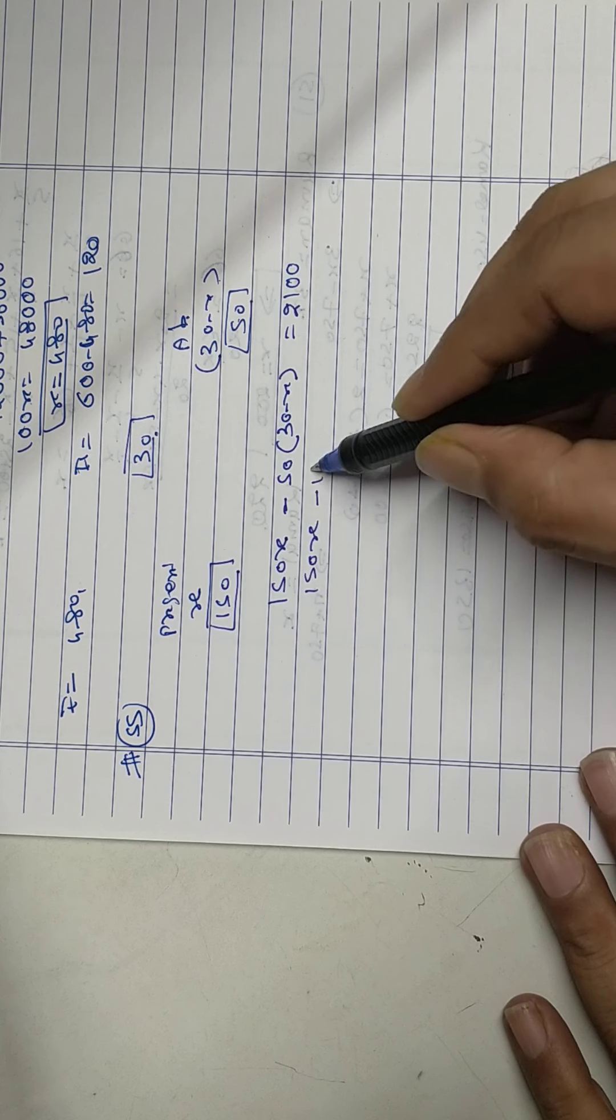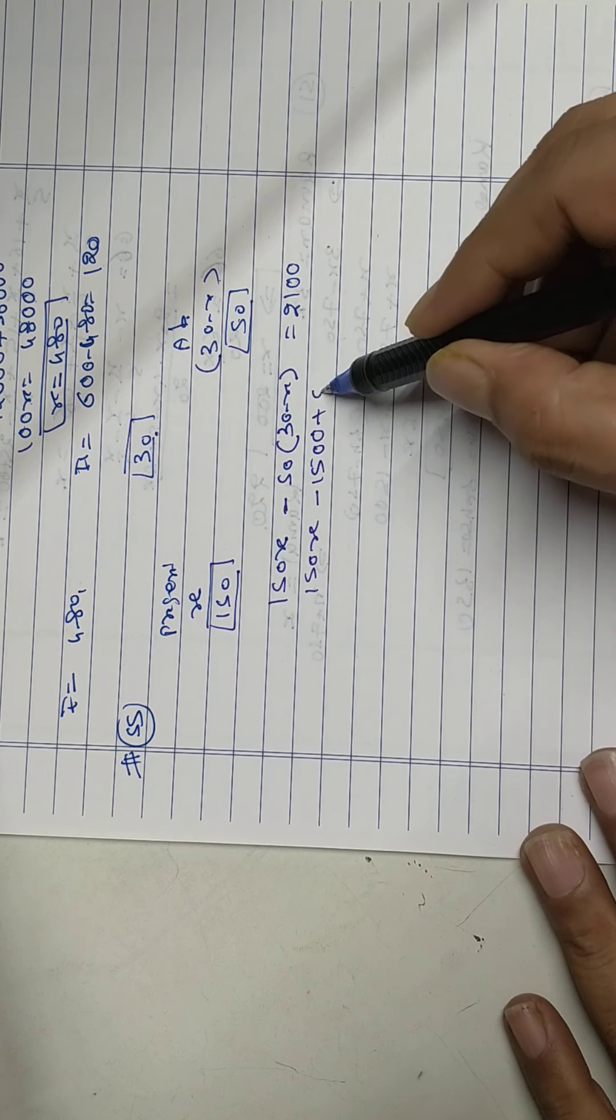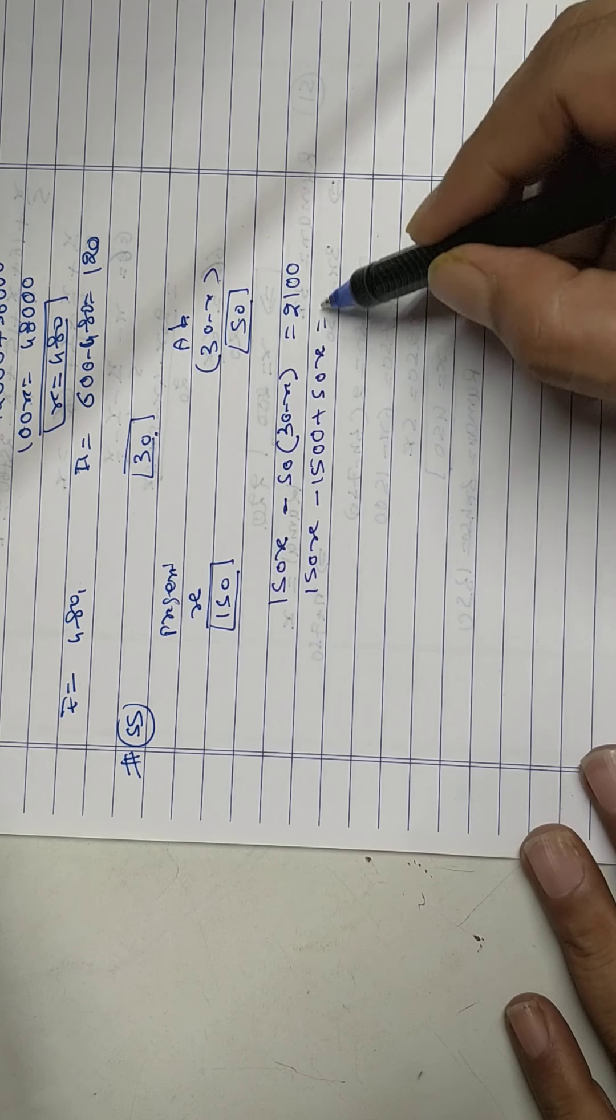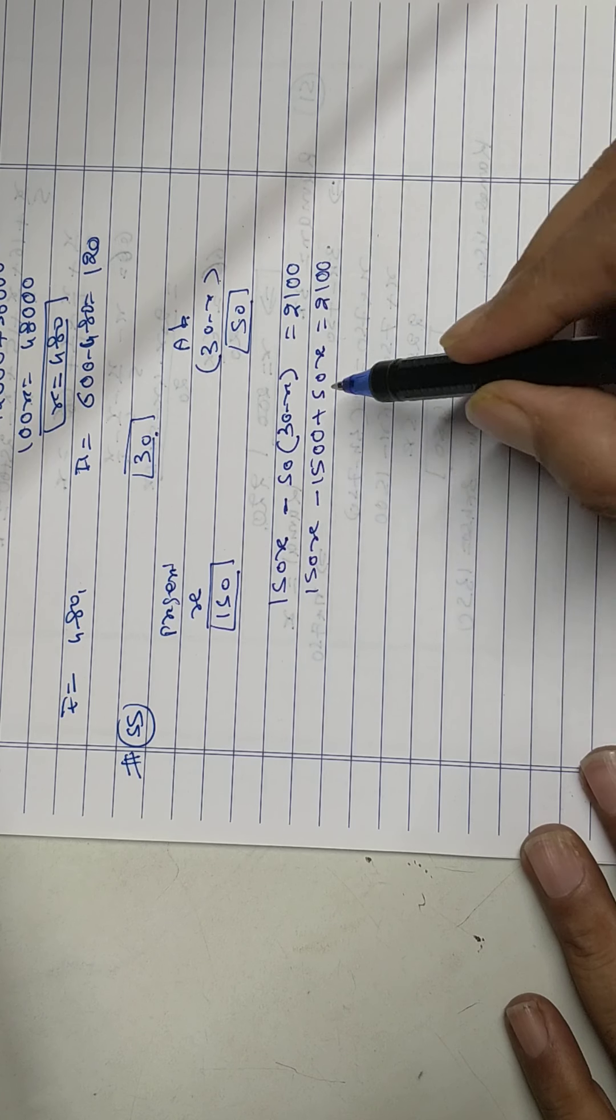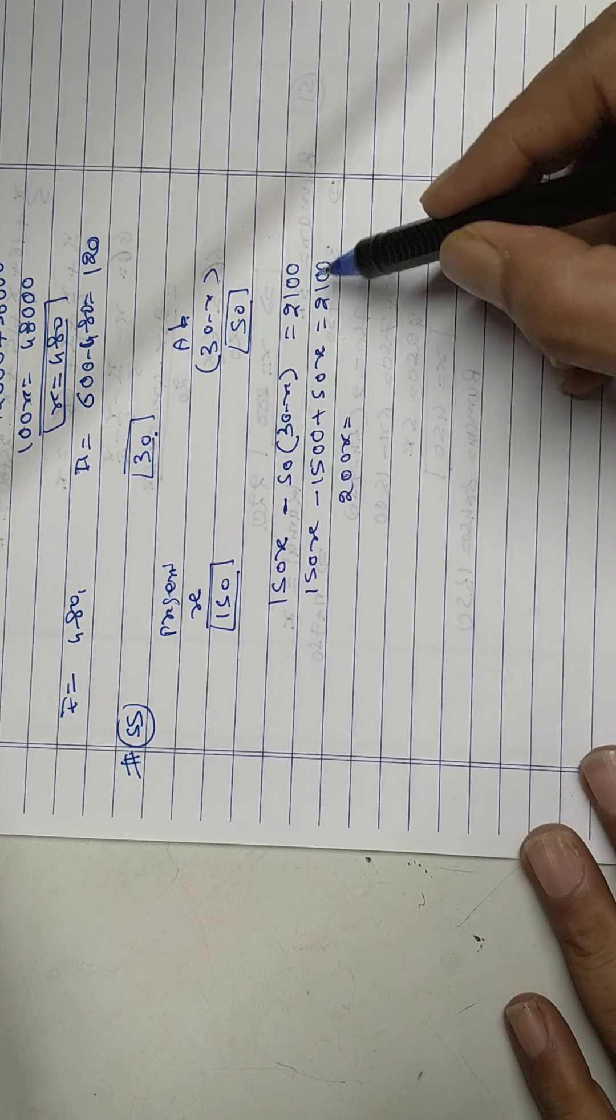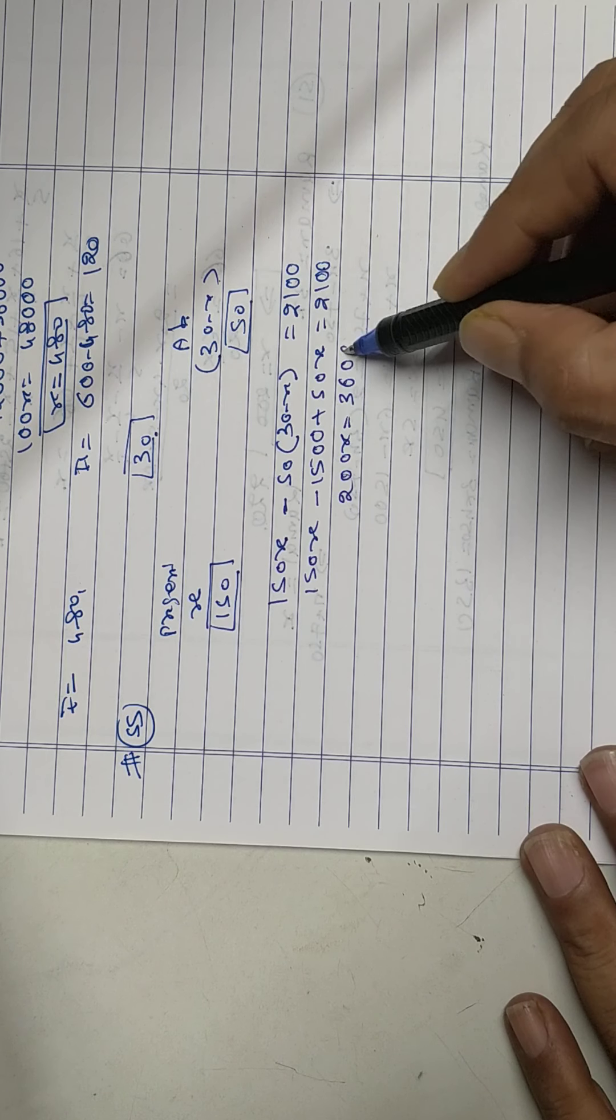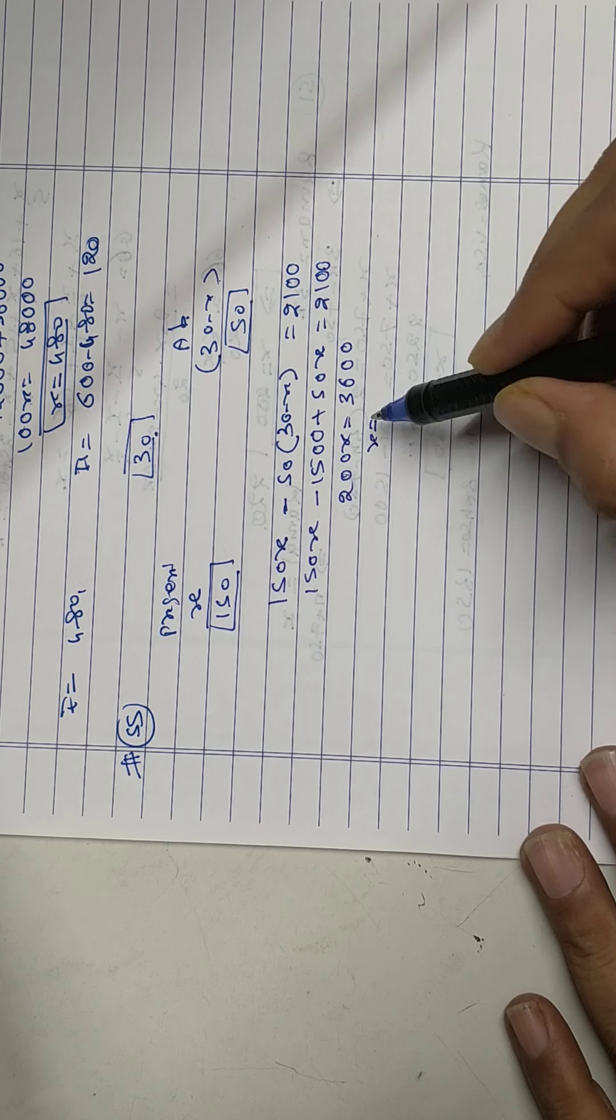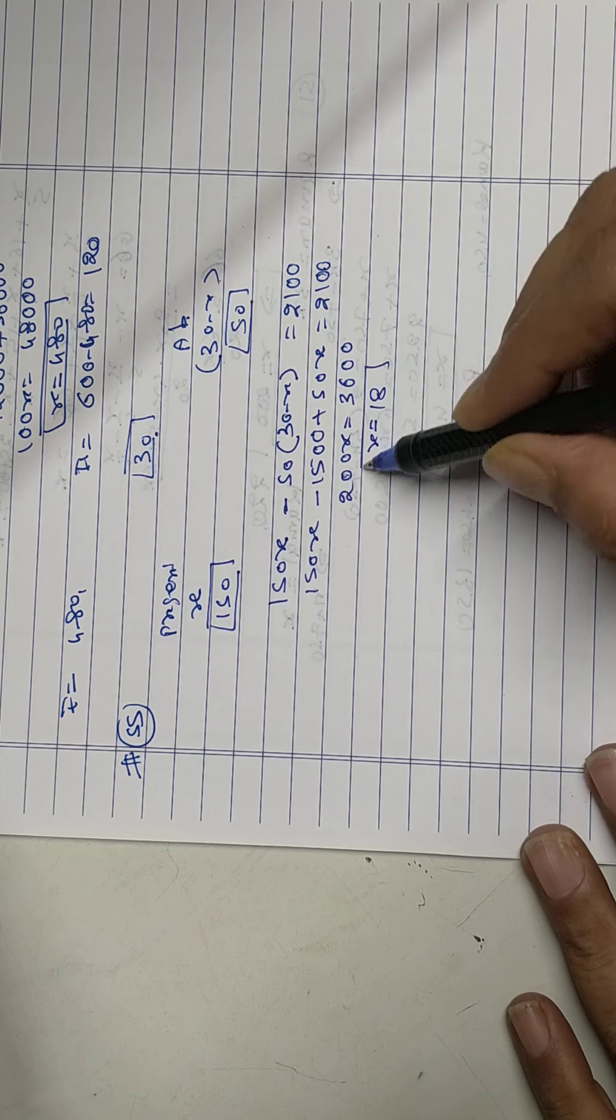Equal to 2100. 150x minus, plus 50x. 200x equal to 1500 goes there become 3600. X equals to 18.